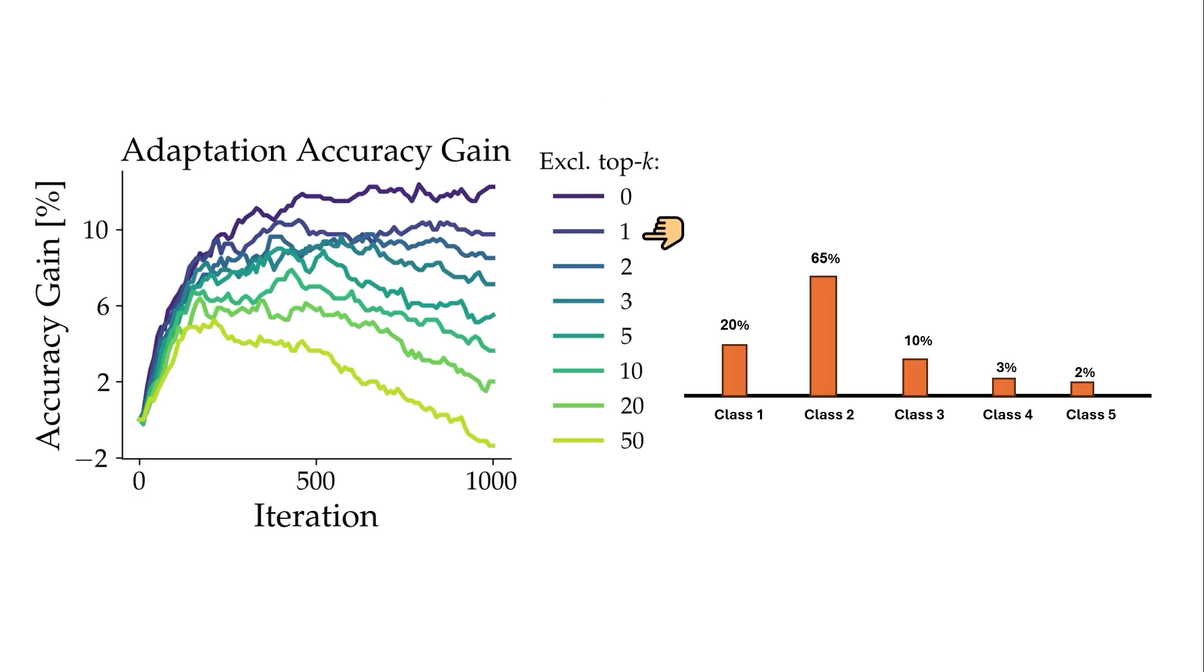But once we say exclude top one, that means let's look at the model prediction. Based on this output, it classified the given input as class two. If it is actually class two, then that means we have a correct output. And in this case, we exclude them from the training data of entropy minimization technique. So entropy minimization only receives the data that the model in fact estimate them as a wrong class.